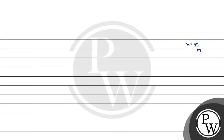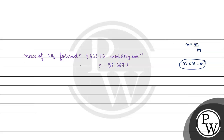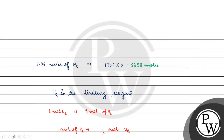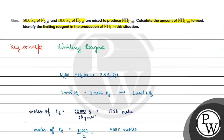Mass nikalna hai — hamare paas moles mil gaye hain. Number of moles into molar mass equals mass. Mass of ammonia formed will be equals to three thousand three hundred thirty-three point three three moles into seventeen gram per mole. Basically hamare paas ho jaega 56.667 kg ke barabar. This will be the final answer for this question. I hope you understood it well. Thank you, all the best.